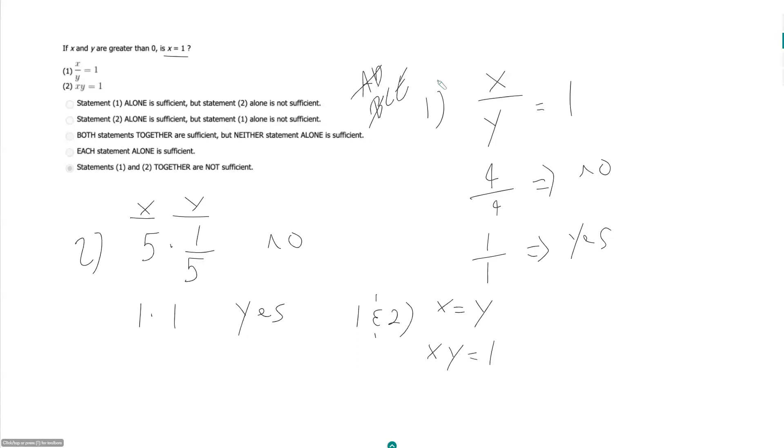So the only way we can multiply two of the same number to get a value of 1 would be if it's 1 times 1. So together, it is sufficient to say x and y are both equal to 1. So C.